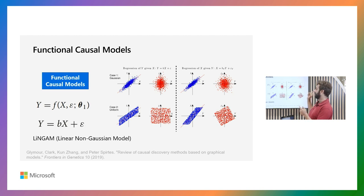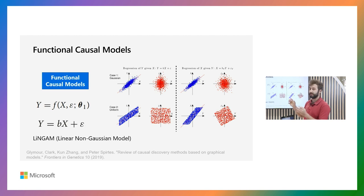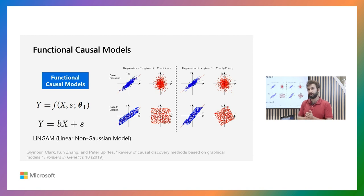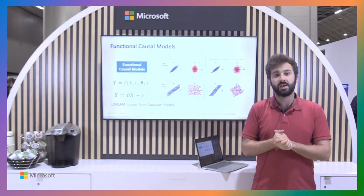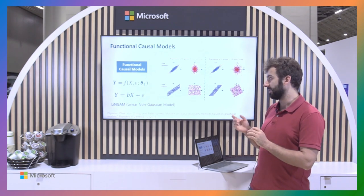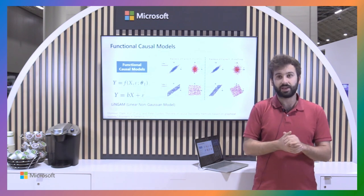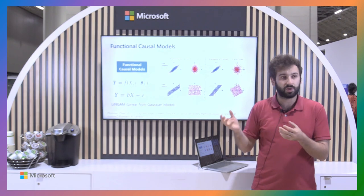For example, looking at a linear model with Gaussian noise or uniform noise: in the Gaussian case, when we regress Y from X or X from Y, there is no difference in the residuals. Whereas in the uniform case, when we regress Y from X, the residuals are independent of X; but when we try to regress X from Y, the residuals are not independent anymore. This is one of the main assumptions in the structural equation model framework: the exogenous noise, or residuals, should be independent of everything else if there are no latent confounders. This is why we say X actually causes Y — this is the direction where residuals are independent. This generalizes to much more complicated functions and distributions.